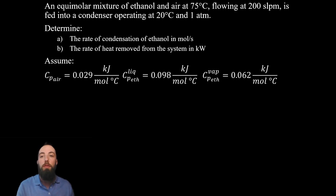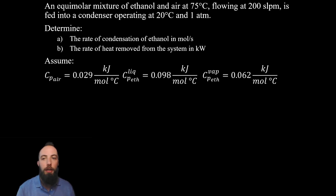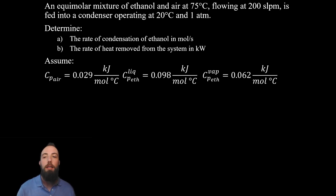The problem states: an equimolar mixture of ethanol and air at 75 degrees Celsius, flowing at 200 standard liters per minute, is fed into a condenser operating at 20 degrees Celsius and one atmosphere. Part A asks us to determine the rate of condensation of ethanol in moles per second — that's this video, a mole balance. Part B asks us to determine the rate of heat removed from the system in kilowatts, which is video two.